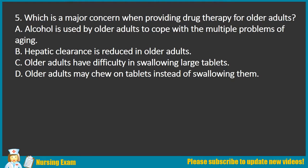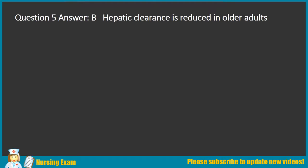Question 5. Which is a major concern when providing drug therapy for older adults? A. Alcohol is used by older adults to cope with the multiple problems of aging. B. Hepatic clearance is reduced in older adults. C. Older adults have difficulty swallowing large tablets. D. Older adults may chew on tablets instead of swallowing them. Answer: B. Hepatic clearance is reduced in older adults.